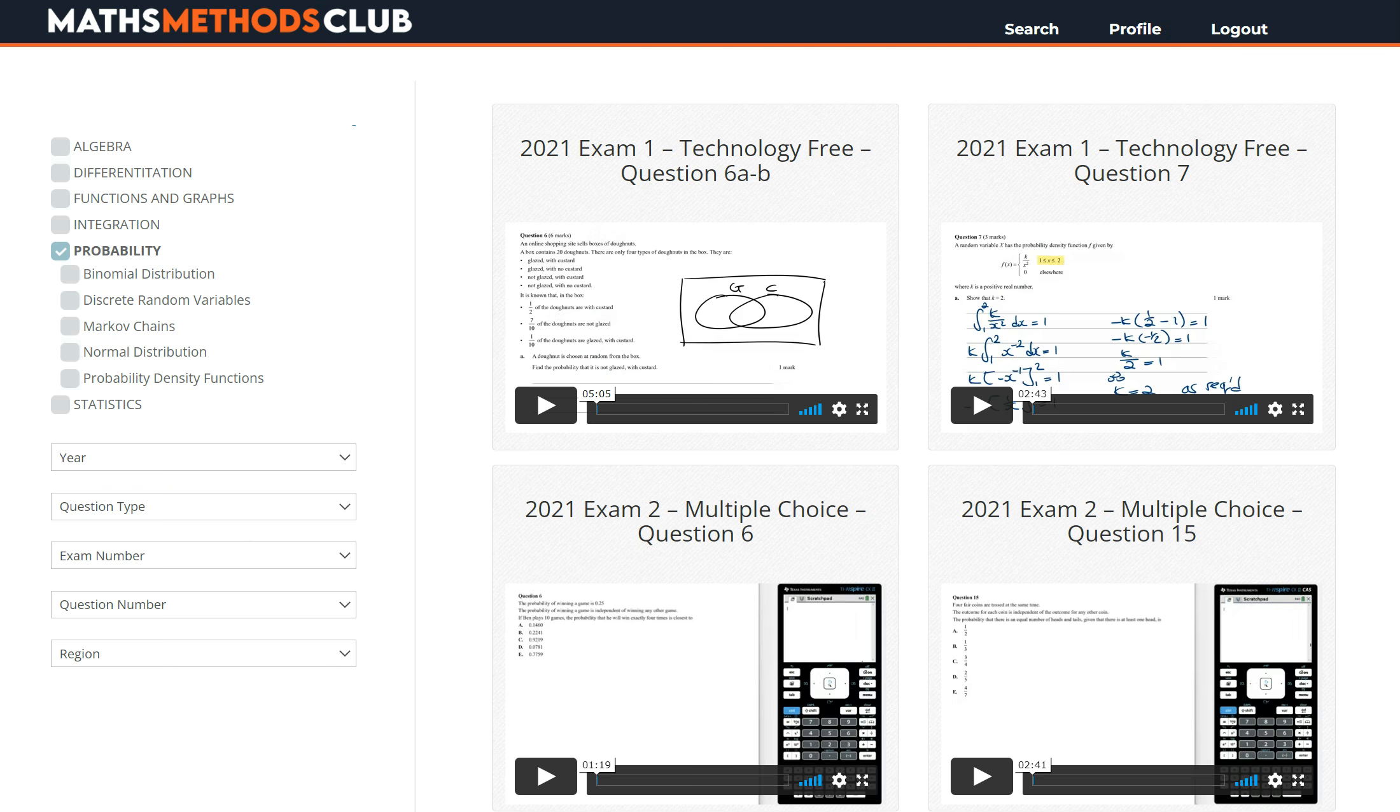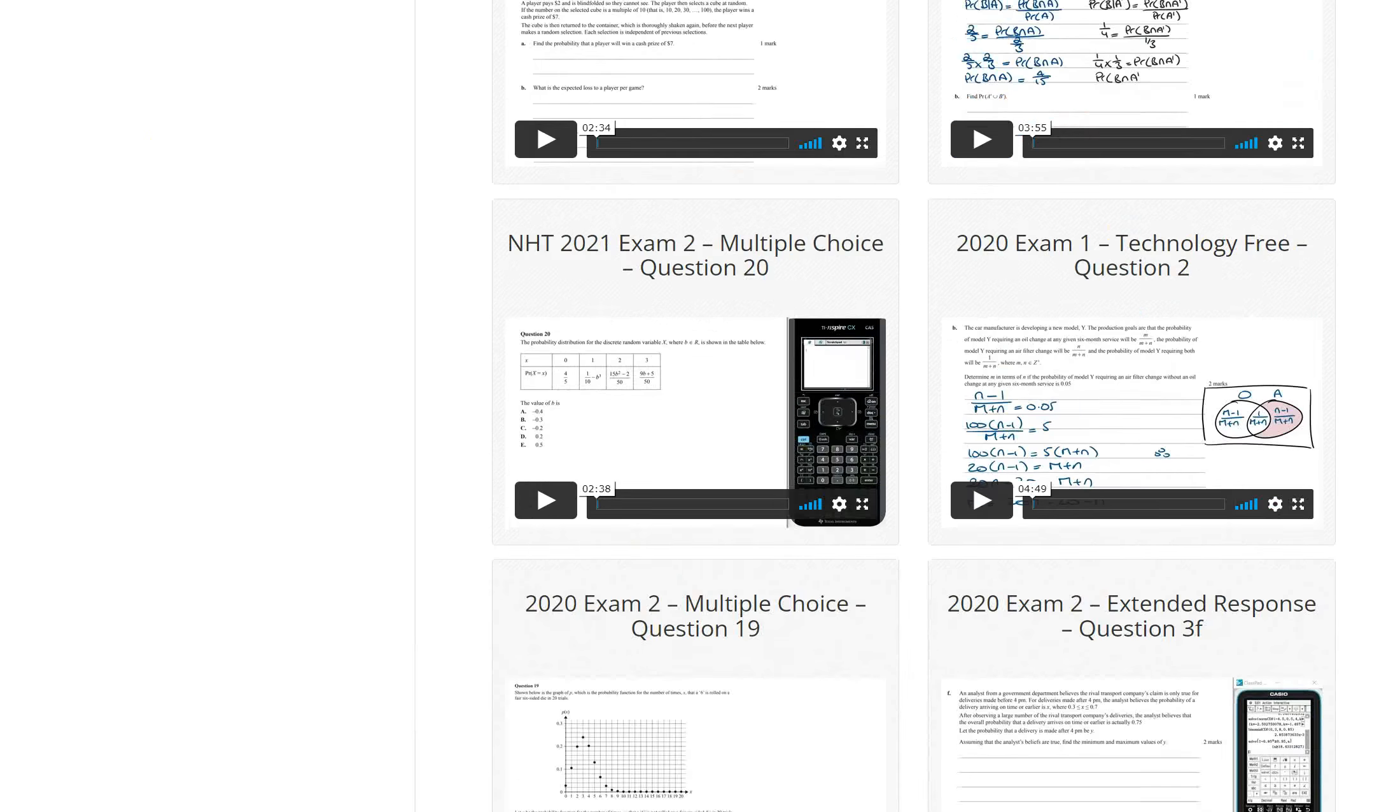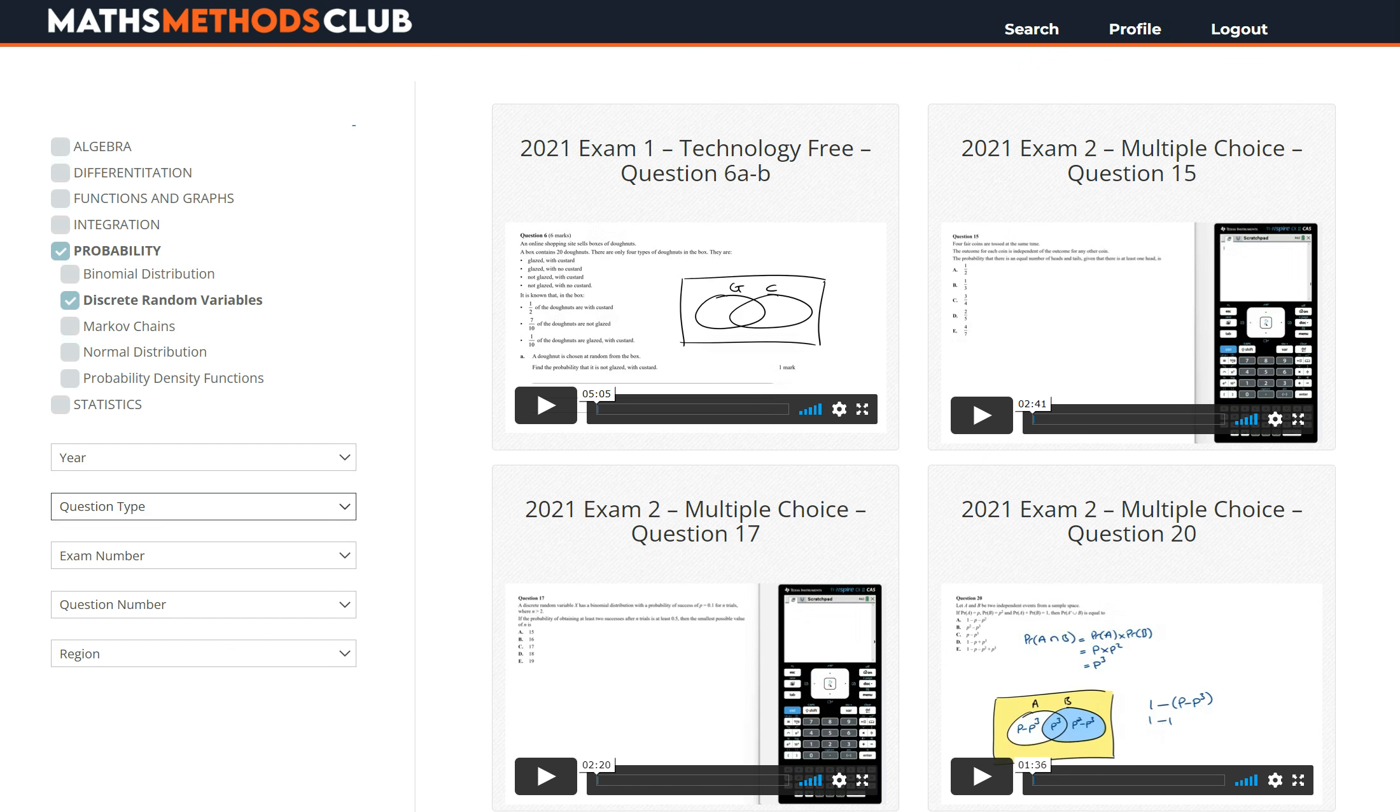And then from the subtopic select discrete random variables. There's about 70 different exam style questions you can try. I suggest you start with the tech free questions, move up to the multiple choice and then the extended response. Good luck and I'll see you guys in the next video.